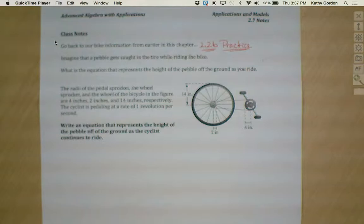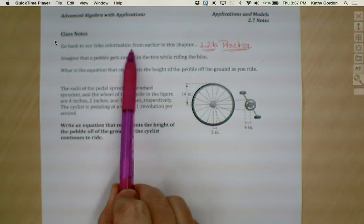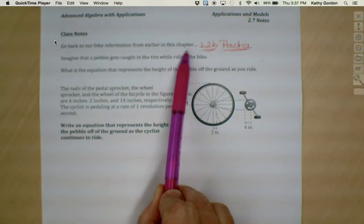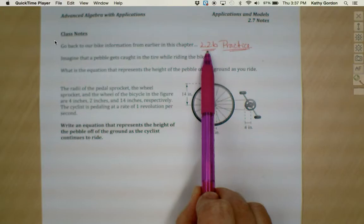If you turn in your books to your notes page for 2.7, you'll notice that it's asking you to go back to our bike information from earlier in this chapter. The information we're going to be using is this problem that we saw back in the 2.2b practice.